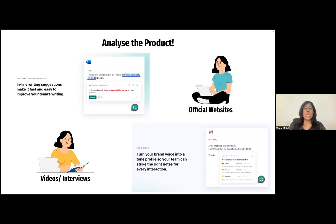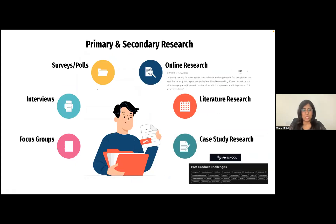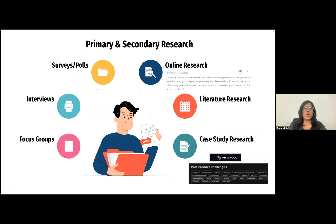Next we come to primary research — basically any type of research that you collect yourself. Here, interviews, surveys, and discussions with long-term as well as new users of the product are very helpful. Additionally, going through Google Play Store or App Store reviews helps you gain unique insights into things.